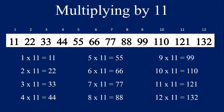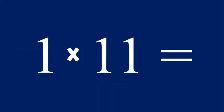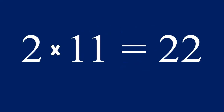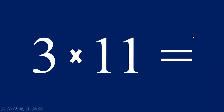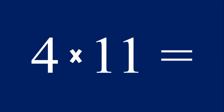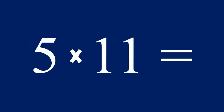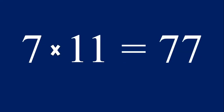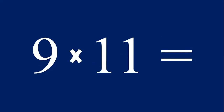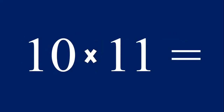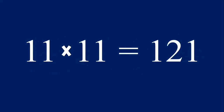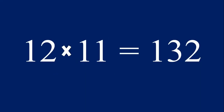Now let's multiply the equations one through twelve by the number eleven. One times eleven equals eleven. Two times eleven equals twenty-two — see, it's just this number two written twice. Three times eleven equals thirty-three, four times eleven equals forty-four, five times eleven equals fifty-five, six times eleven equals sixty-six, seven times eleven equals seventy-seven, eight times eleven equals eighty-eight, nine times eleven equals ninety-nine, ten times eleven equals one hundred and ten, eleven times eleven equals one hundred and twenty-one, and twelve times eleven equals one hundred and thirty-two.